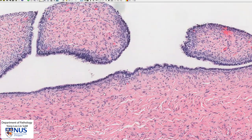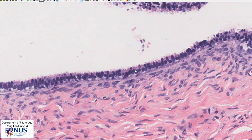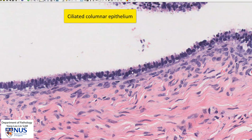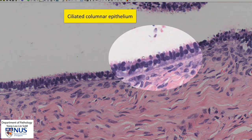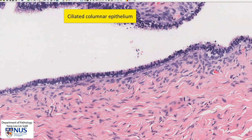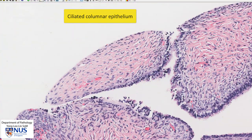Let's take a closer look at the lining epithelium. We can see that these are columnar cells. The nuclei are relatively basely located. At the surface of these cells we can see cilia — these look like little hairs arising on the surface and they are similar to the cilia that we see in the respiratory tract. This epithelium closely resembles epithelium of the fallopian tube.